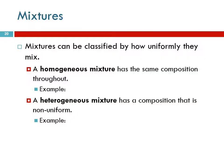So how do we divide up mixtures? We divide them by how uniformly they mix. Homogeneous mixtures — the prefix 'homo' means the same, so homogeneous means it mixes the same throughout. If you look at a homogeneous mixture, the composition on the top, the bottom, and all throughout is going to be the same. It's going to look very uniform — you're not going to see bubbles or chunks or layers or anything.